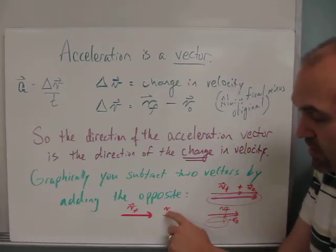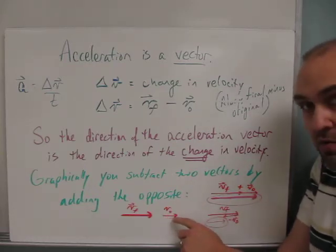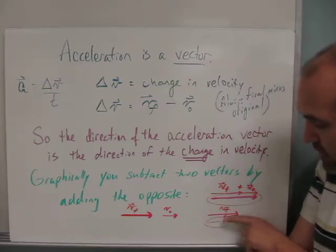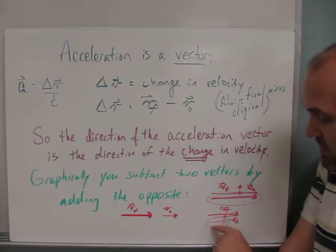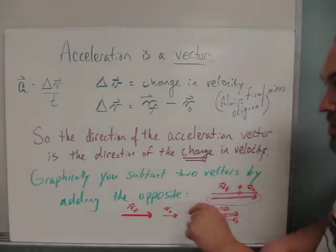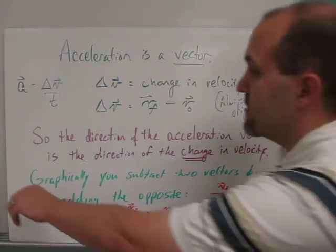But if I'm subtracting vo, instead of adding vo tip to tail, I flip it around so it's pointing left. That's minus vo. And so the acceleration vector is this. This is the representation of the change in the velocity vector from final minus the original. Let's look at some other examples.